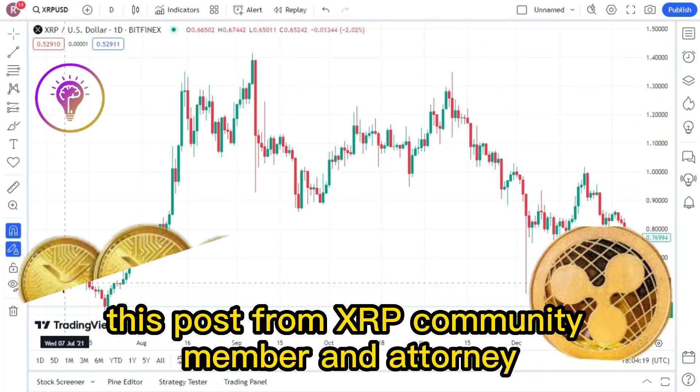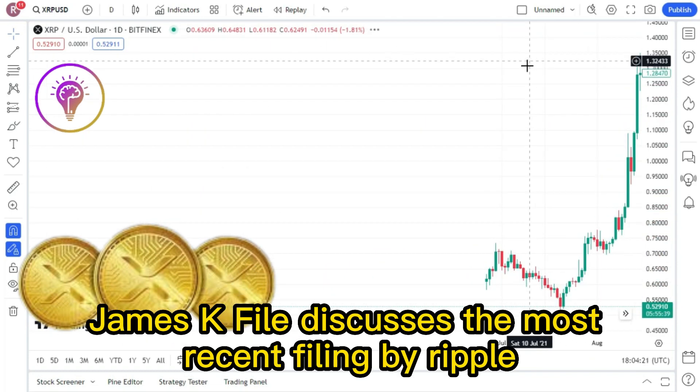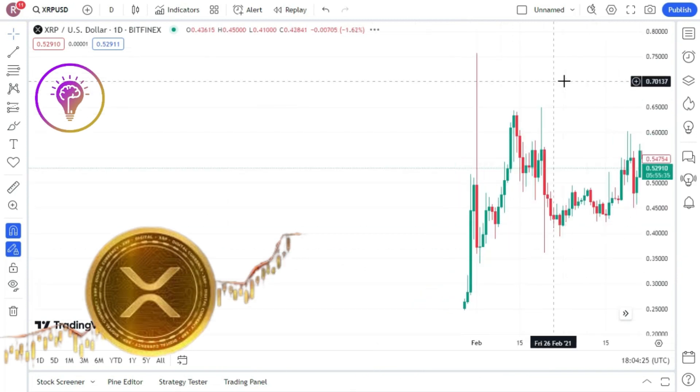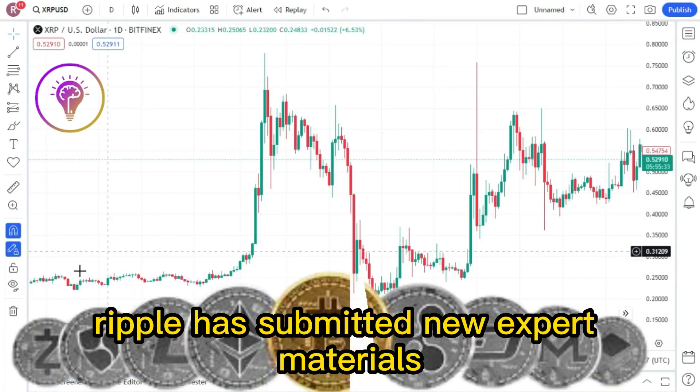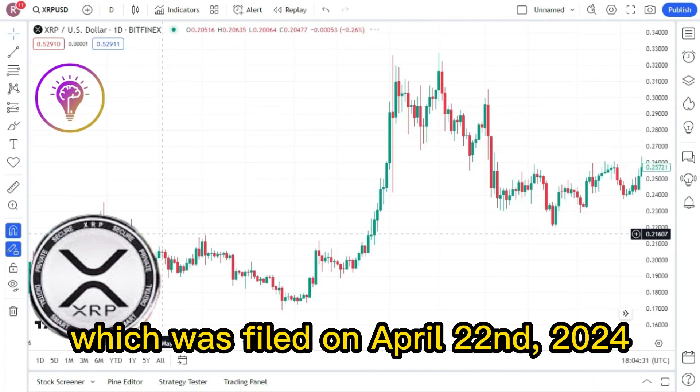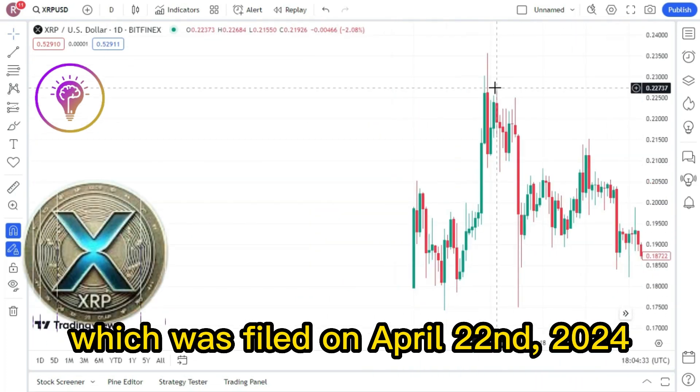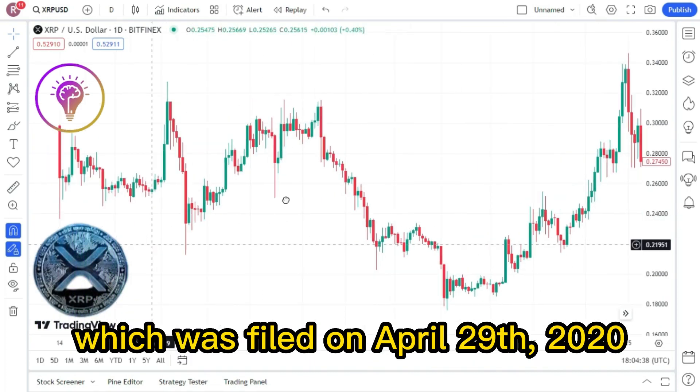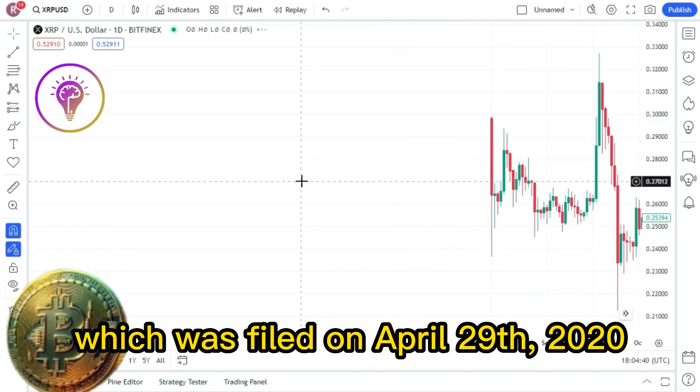However, this post from XRP community member and attorney James K. File discusses the most recent filing by Ripple. In it, he states that Ripple has submitted new expert materials in support of its motion to strike, which was filed on April 22, 2024, and a response to the SEC's opposition to the motion, which was filed on April 29, 2020.